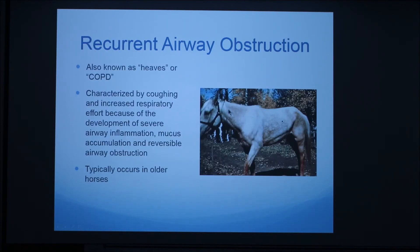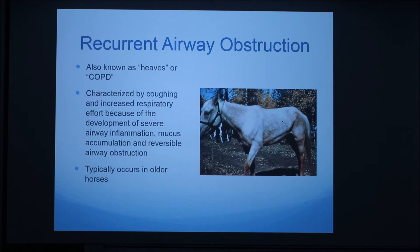Lastly, I want to touch on recurrent airway obstruction, also known as RAO, HEAVES, or COPD. This is very similar to asthma in humans and also similar to IAD, just a more extreme and prolonged case. It is characterized by coughing and increased respiratory effort due to severe airway inflammation, mucus accumulation, and reversible airway obstruction. This typically occurs in older horses, whereas inflammatory airway disease is typically seen in younger, two-year-old racehorses. This horse shown here has RAO — you can see what we call the heave line, due to hypertrophy of the abdominal muscles that assist in breathing and enlarge due to the excess work being done.